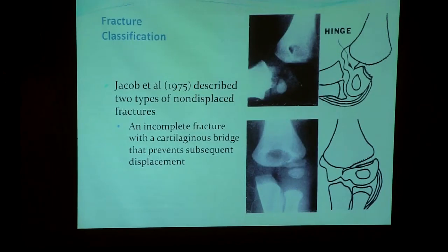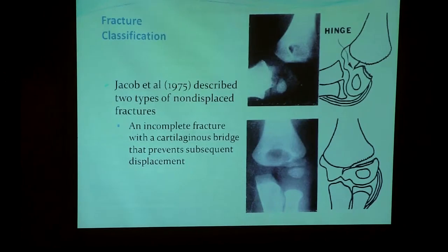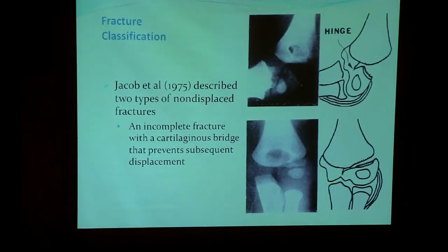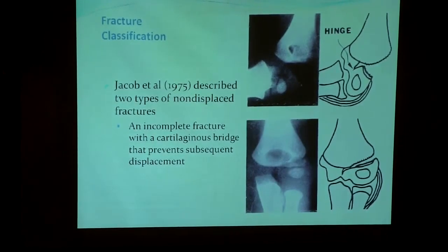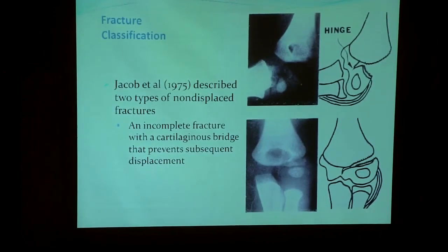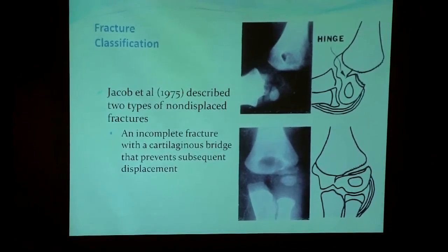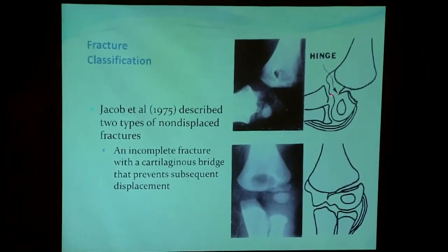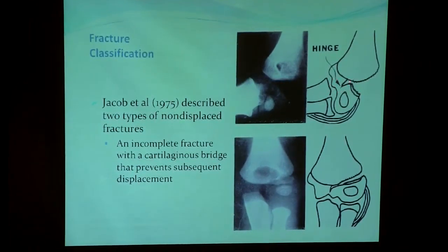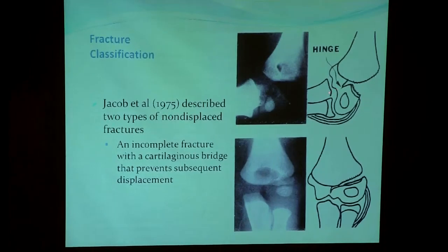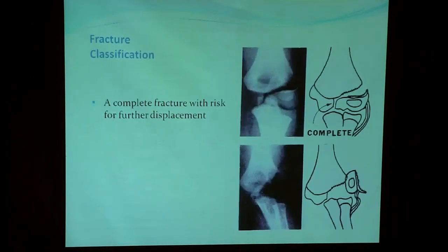Jacob, in 1975, described two types of non-displaced or minimally displaced fractures. Usually the problem lies in the minimally displaced fracture, whether it will be primarily displaced or re-displaced after conservative treatment. Jacob said that if there is a cartilaginous hinge, the fracture is stable and there will be no further displacement if treated by cast. The other type is an incomplete fracture with no cartilaginous hinge, and this fracture is prone to further displacement.